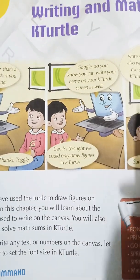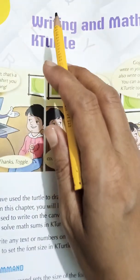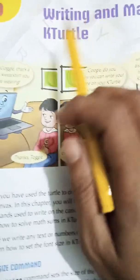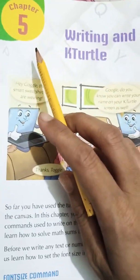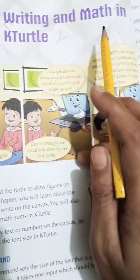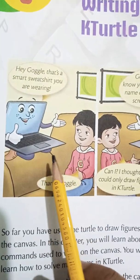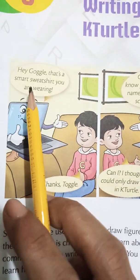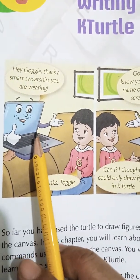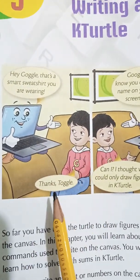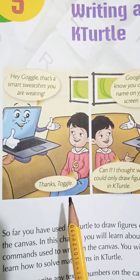Open your book to page number 54. Write today's date and day. Today we will start chapter number 5: Writing and Math in K-Turtle. Let's see what they are talking about. Hey Goggle, that's a smart sweatshirt you are wearing! Thanks, Choggle!